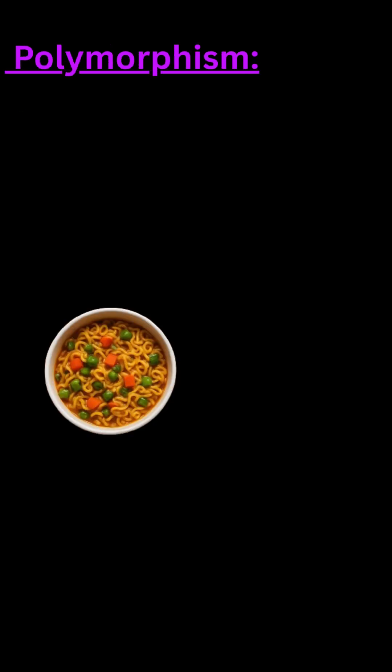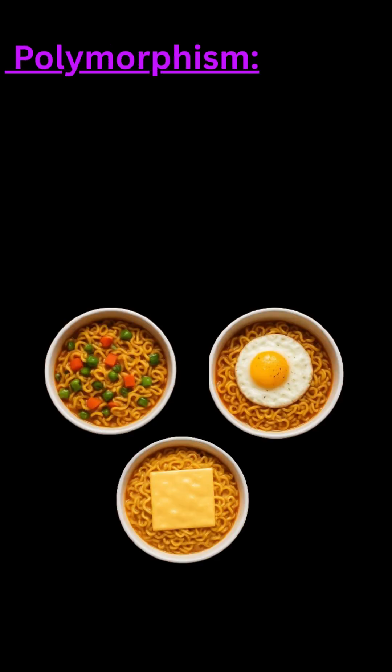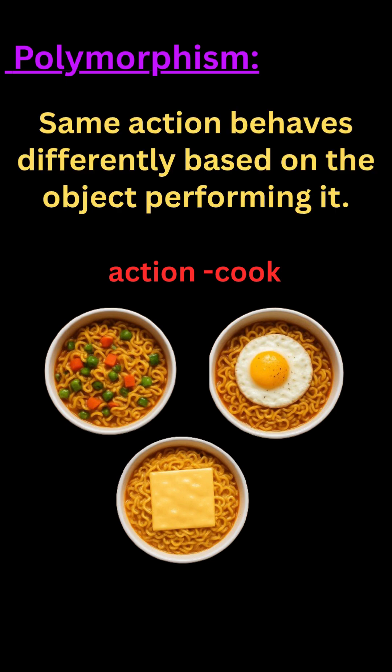Next, we have different types of Maggi — veg, eggs, and cheese. We have the same action for the Maggi, but the ingredients and taste are different. Same action with a different behavior. So, same action behaving differently based on the object performing it is called Polymorphism. Simply, we can say: same action with a different behavior.